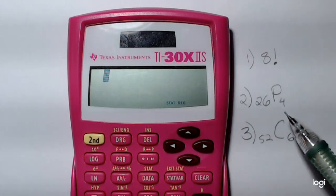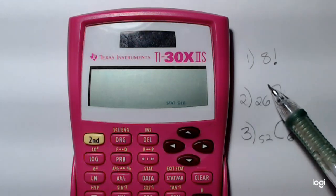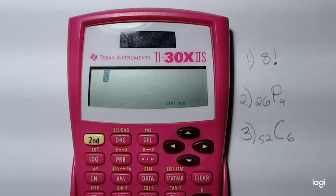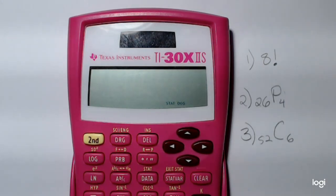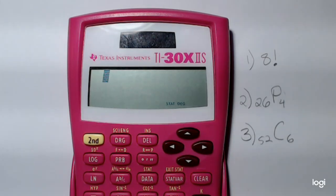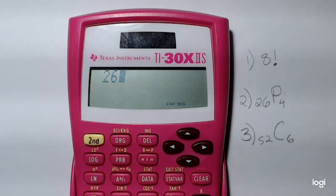To get a permutation, let's find 26 permute 4. An example of that would be, I have an alphabet of 26 letters, and I would like to permute 4 of them at a time. So to get this permutation, I want to put in N first, which is 26.